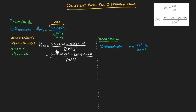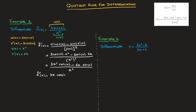Now we simplify as much as possible. Bringing x squared to the front of cosine of x, and 2x to the front of sine of x, this becomes 3x squared times cosine of x, minus 6x times sine of x, all written over x squared squared, where we multiply the two powers to write x to the power of 4. Finally, we notice that all three terms have a common factor of x, so we simplify one step further to write f dash of x equals 3x cosine of x minus 6 sine of x, over x cubed. And that's the answer.